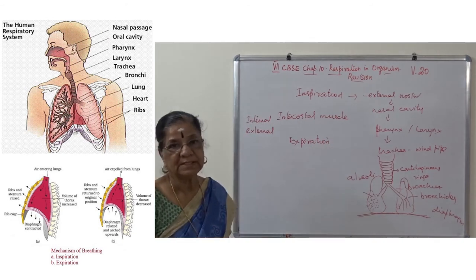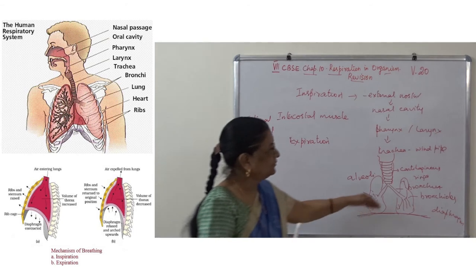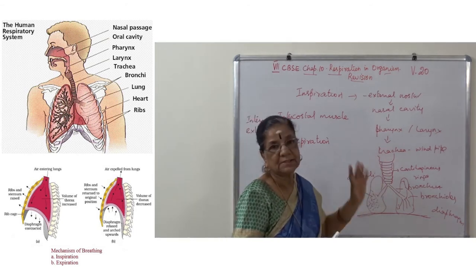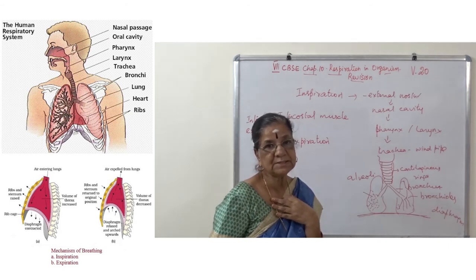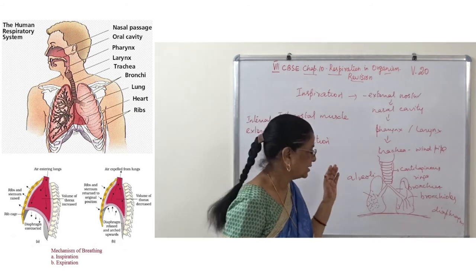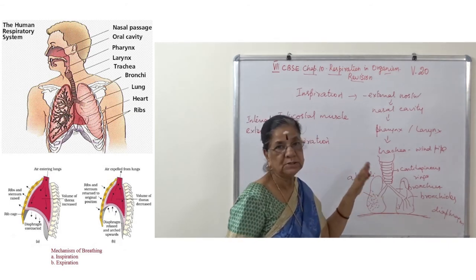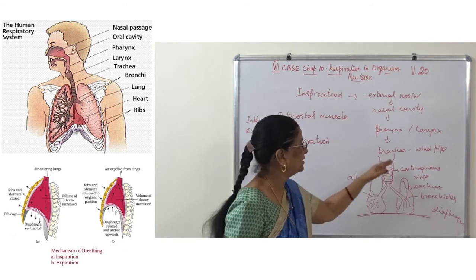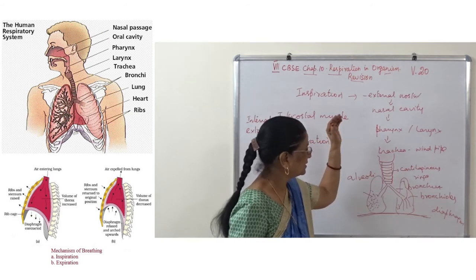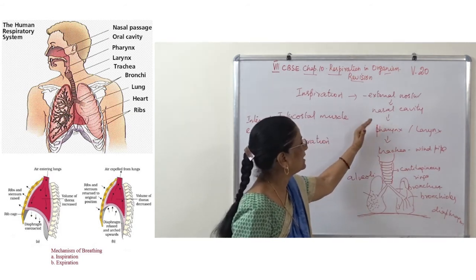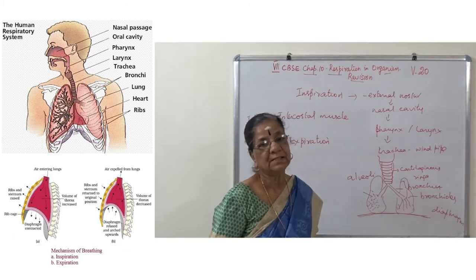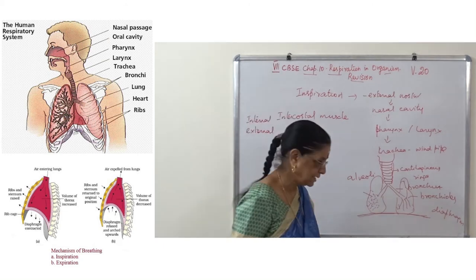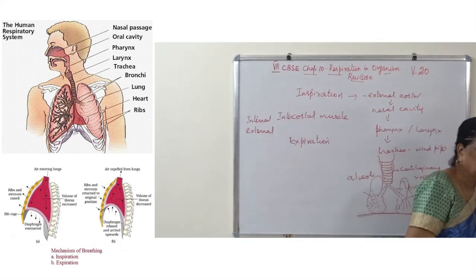During expiration, the reverse track of the respiratory process occurs — carbon dioxide moves from alveoli through bronchioles, bronchus, trachea, larynx, pharynx, nasal cavity, and out through the external nostril.